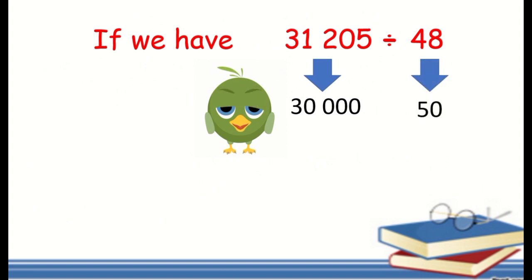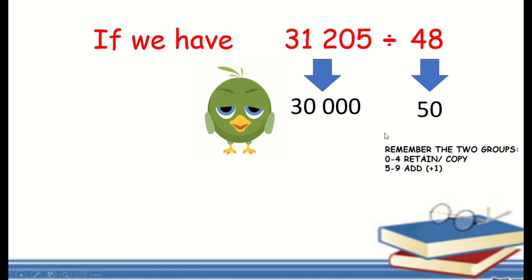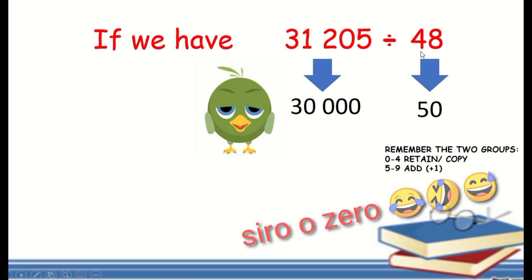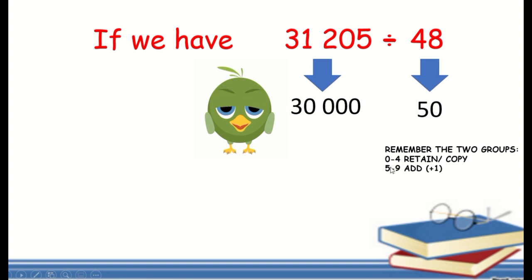For estimated quotient, we need to round up to the greatest place value. The greatest place value of 31,205 is the ten-thousands digit, which is 3. For 48, the greatest place value digit is 4. There are two groups: 0 to 4 — retain or copy; 5 to 9 — add 1. The digit beside 3 is 1, which belongs to the 0–4 group, so we retain 3 and the rest become 0. For 48, the digit beside 4 is 8, which belongs to the 5–9 group, so 4 becomes 5 and the next digit becomes 0.